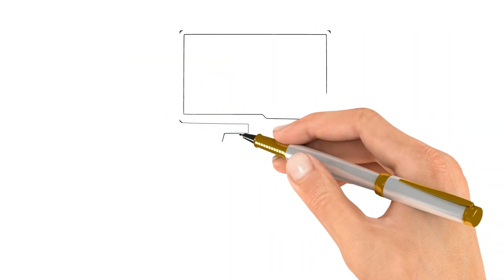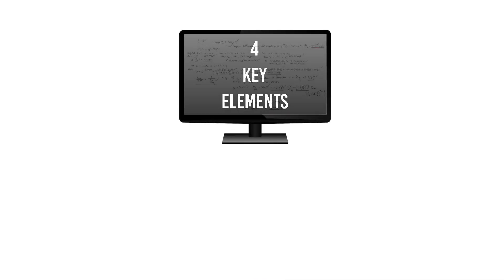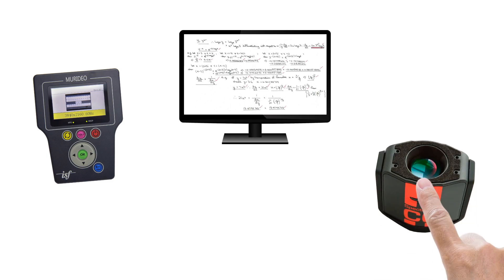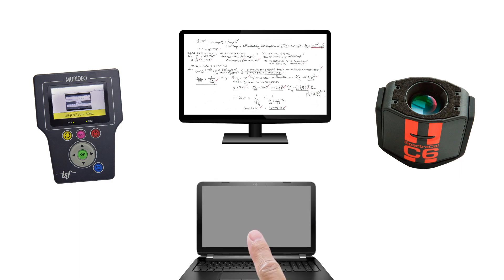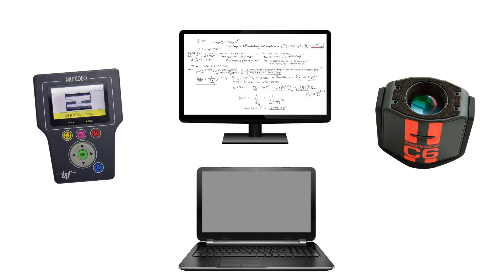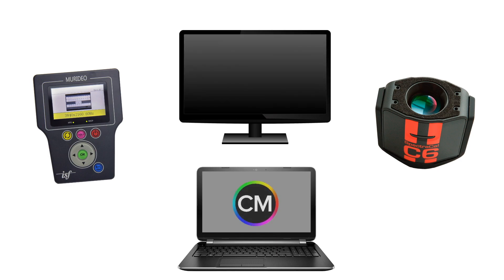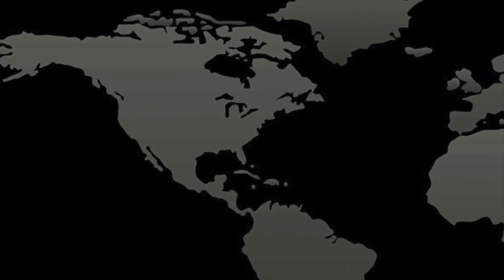The display calibration process usually consists of four key elements, and the calibrator needs to make complex calibration calculations throughout the process, requiring knowledge of imaging science, a test pattern generator, a light meter, and software to organize the process from start to finish. This video will demonstrate how Calman by SpectraCal fits these requirements perfectly.